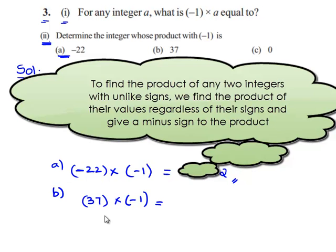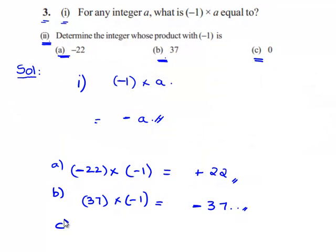The second bit: 37 multiplied by negative 1. First we multiply their values regardless of their signs, that gives 37 into 1 equals 37. When we multiply two integers of different signs we always get a negative sign. Therefore, 37 into negative 1 gives minus 37.